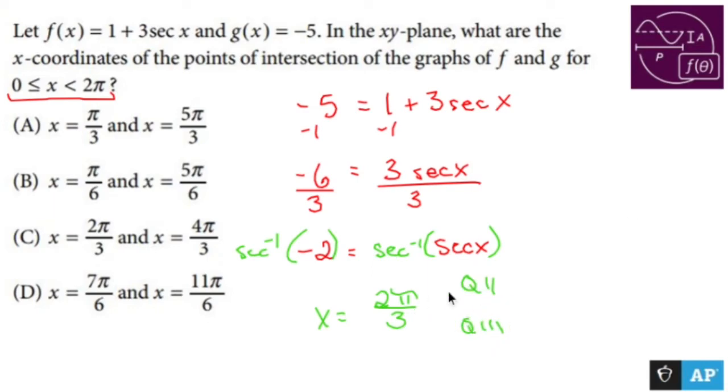Now, this guy lives in quadrant 2. Here's a little picture. Here's π. Here's half a π. So 2 thirds π is going to live somewhere like that. This is quadrant 2.